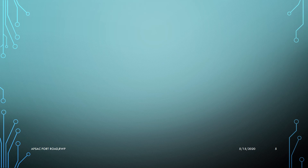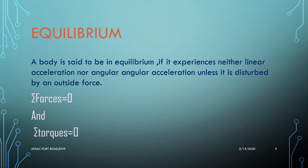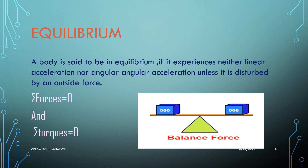Before proceeding to today's topic, let us recall the term equilibrium from our last lesson. A body is said to be in equilibrium if it experiences neither linear acceleration nor angular acceleration, unless disturbed by an outside force. If there is no unbalanced force acting on a body, the body will maintain its state of rest or uniform motion. Mathematically, if the sum of all forces acting on the body is zero and the sum of all torques is zero, the body is in the state of equilibrium.